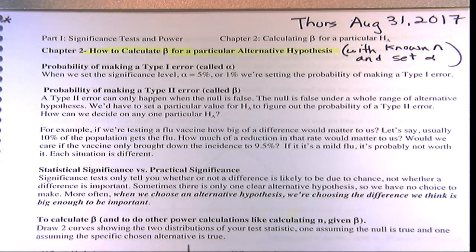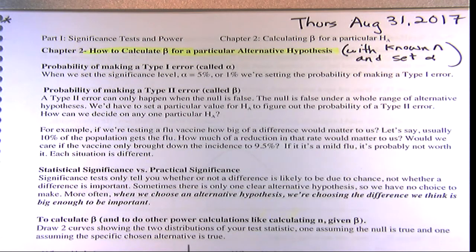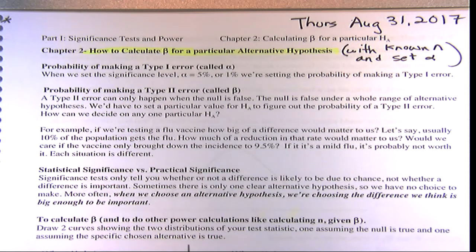That's how you decide on a specified alternative. When thinking about two different teaching methods, we have to decide: do we care if it makes a 1% difference in grades? Maybe we care if it makes a 2–3% difference on average. At what point do you invest money in a teaching method? The smaller the difference, the harder to detect, and the bigger the sample size you need — that's what this chapter is all about.